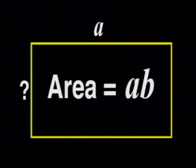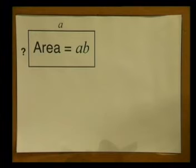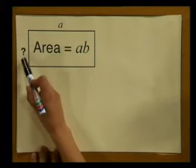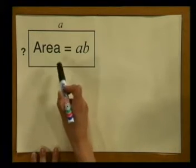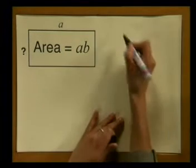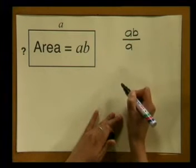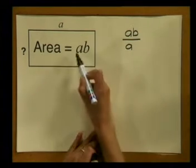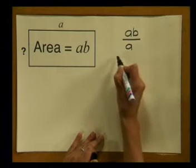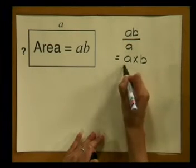Here we are working algebraically. The area of a rectangle is AB. The one side is A. What is the length of the other side? As we did before, to get the length of the unknown side, we have to divide the area by the known side. So we divide AB by A. Now what are the factors of our product AB? They are A and B, so we can write that as A times B divided by A.